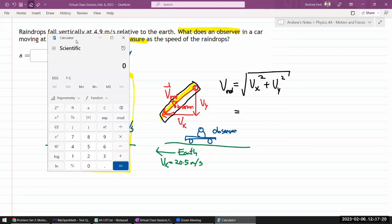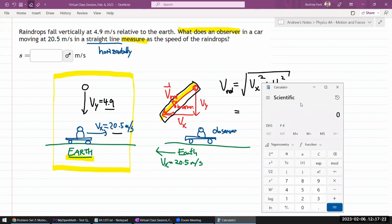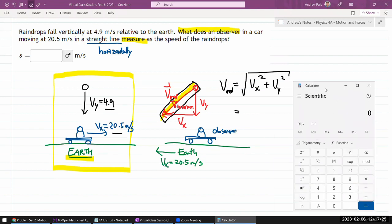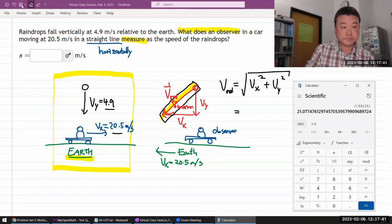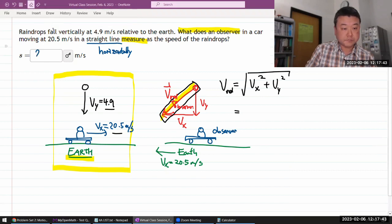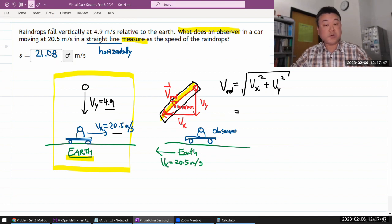So x component squared plus y component squared. So that's the quantity that's under the square root. Let me take the square root. So 21.08 is the speed of the raindrop as measured by the observer in the car.